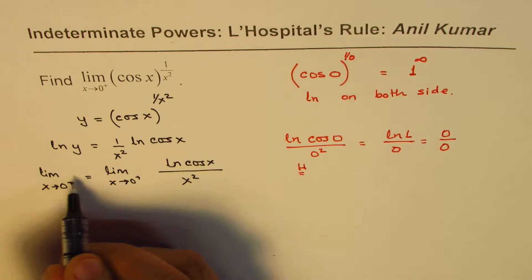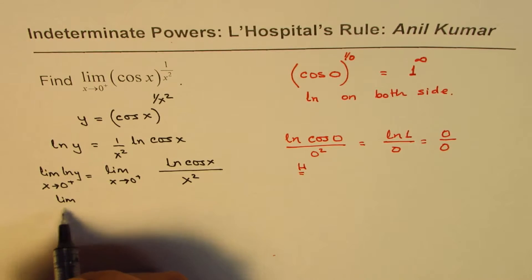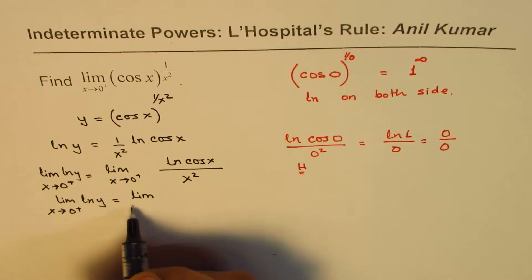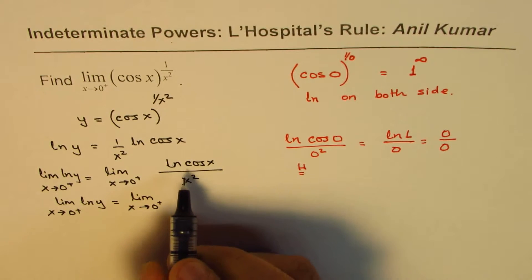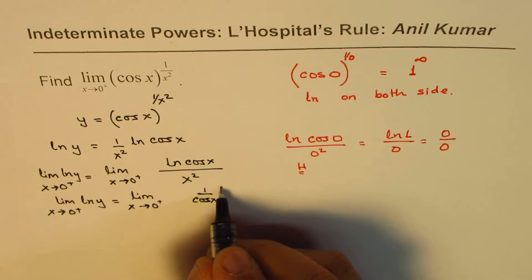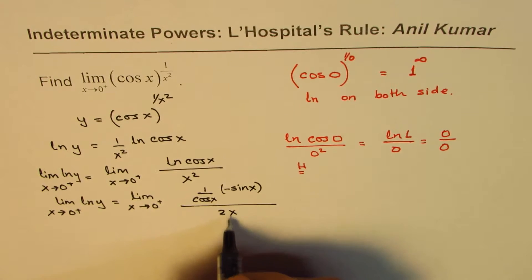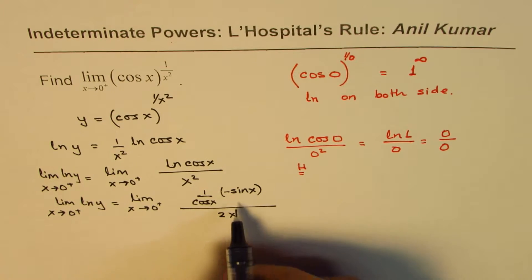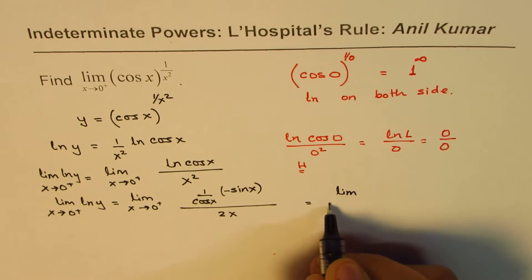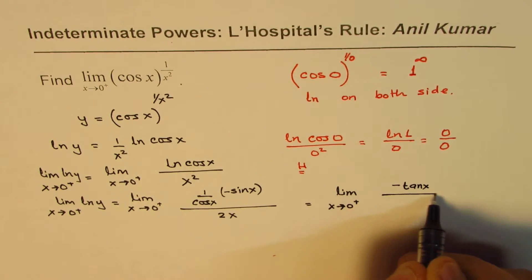So the limit of, I should have written ln y, I forgot to write that, so ln y equals. So we will write limit x approaches 0 from the right side, ln y equals limit x approaches 0 from the positive side. Now derivative of ln cos x is 1 over cos x times derivative of cos x, which is minus sin x divided by x squared derivative is 2. So what we get here is minus tan x divided by 2x. So let me rewrite this as limit x approaches 0 from the right side of minus tan x divided by 2x.